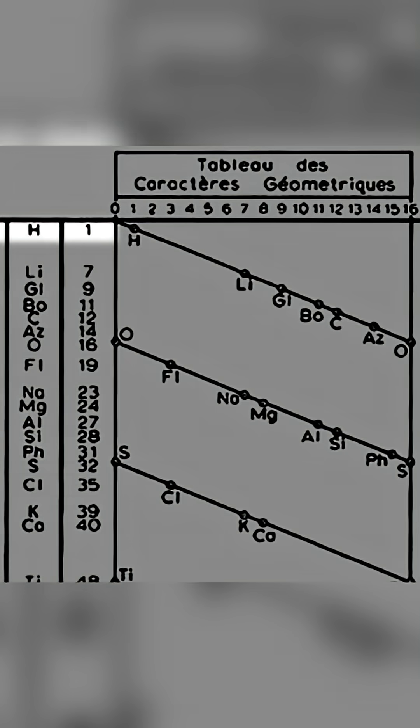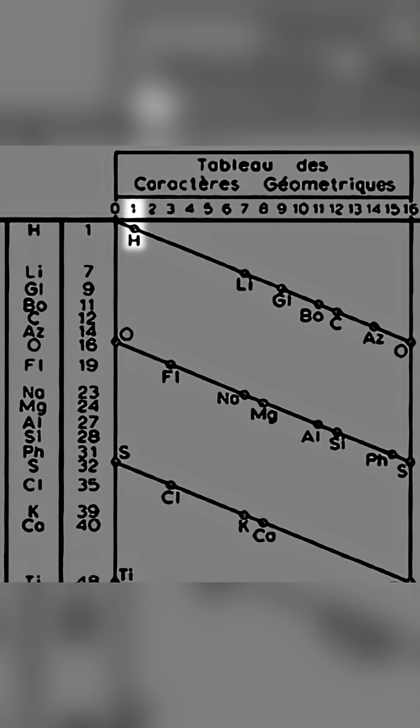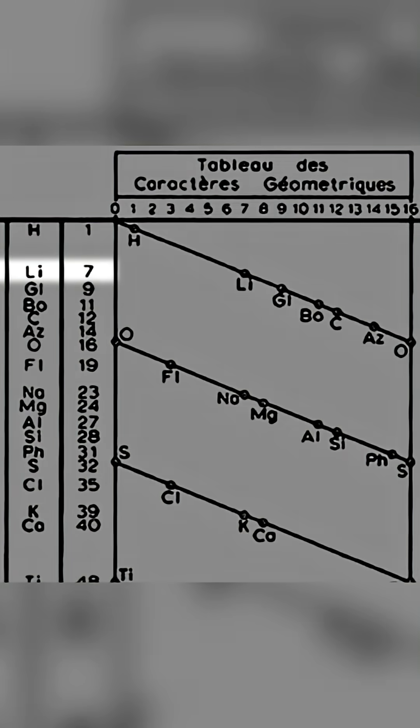So here's how it works. Hydrogen has a relative atomic weight of 1, so Duchamp-Cortois placed a dot here, 1 weight unit into the table. Next we have lithium, which has a relative weight of 7, so its dot is here, 7 units in.